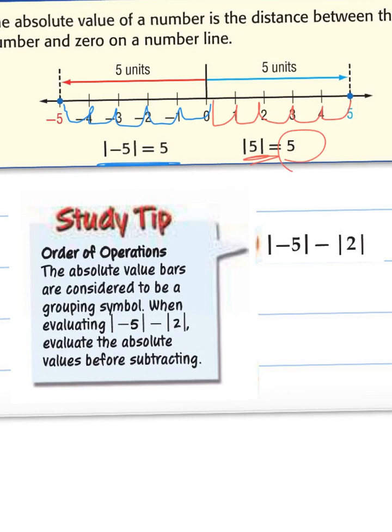Absolute value of negative 5. Negative 5 is 5 spots away from 0. And the absolute value of 2, well, 2 is 2 spots away from 0. Now we do our subtraction. 5 minus 2 is 3, and that is our answer.